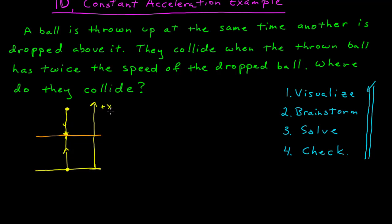A coordinate system requires a positive direction and a zero, and I get to choose that. So for this, absent anything else, I'm going to choose zero to be at the point where the first ball is released, and I'm going to have positive x going up.